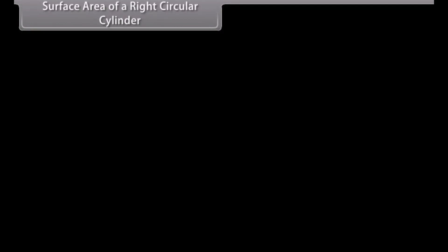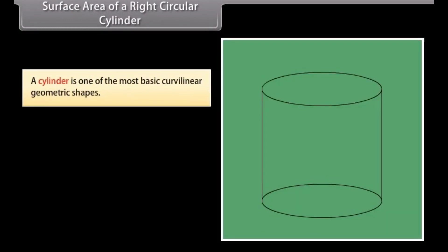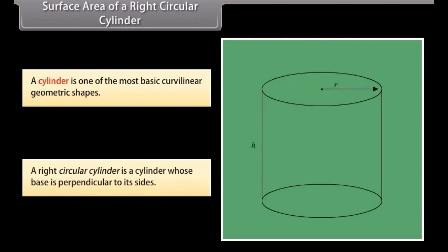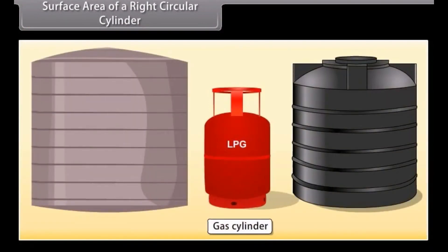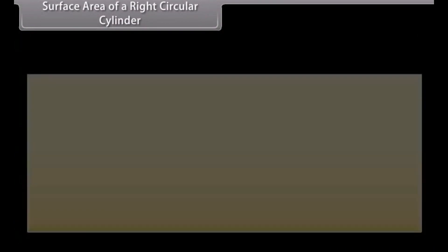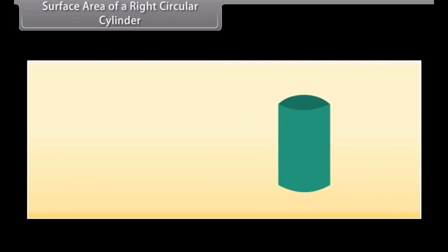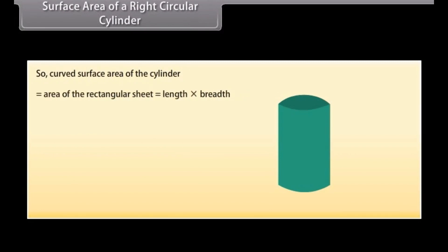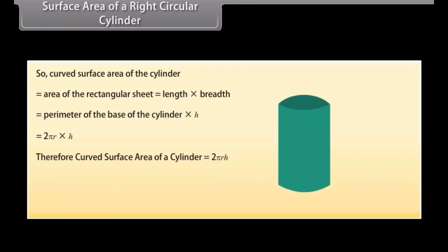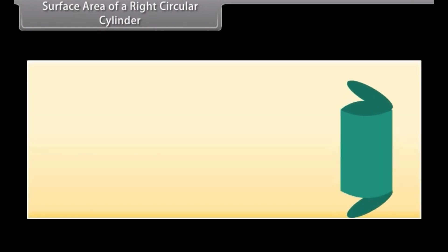Surface area of a right circular cylinder. A cylinder is one of the most basic curvilinear geometric shapes. A right circular cylinder is a cylinder whose base is perpendicular to its sides. Equipment such as gas cylinders, oil storage tanks, and water storage tanks are often of this type. We get the curved surface area of a cylinder by rolling a sheet of paper into a cylinder. The curved surface area of the cylinder equals the area of the rectangular sheet, which equals length × breadth, equal to the perimeter of the base × height, which equals 2πr × h.